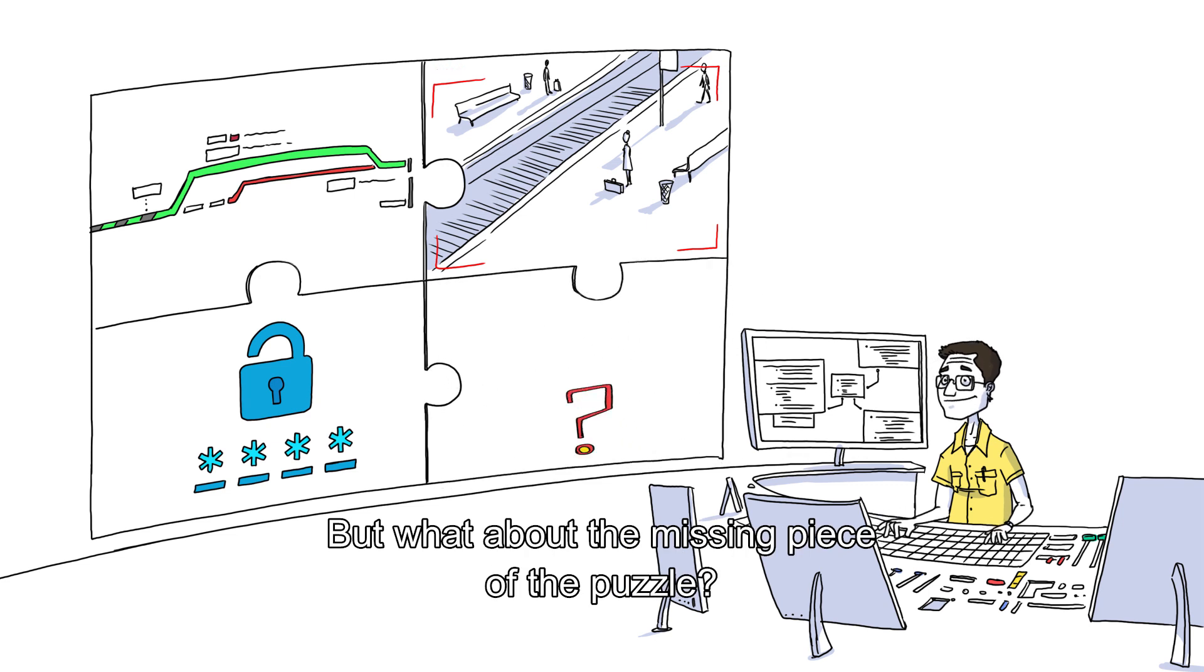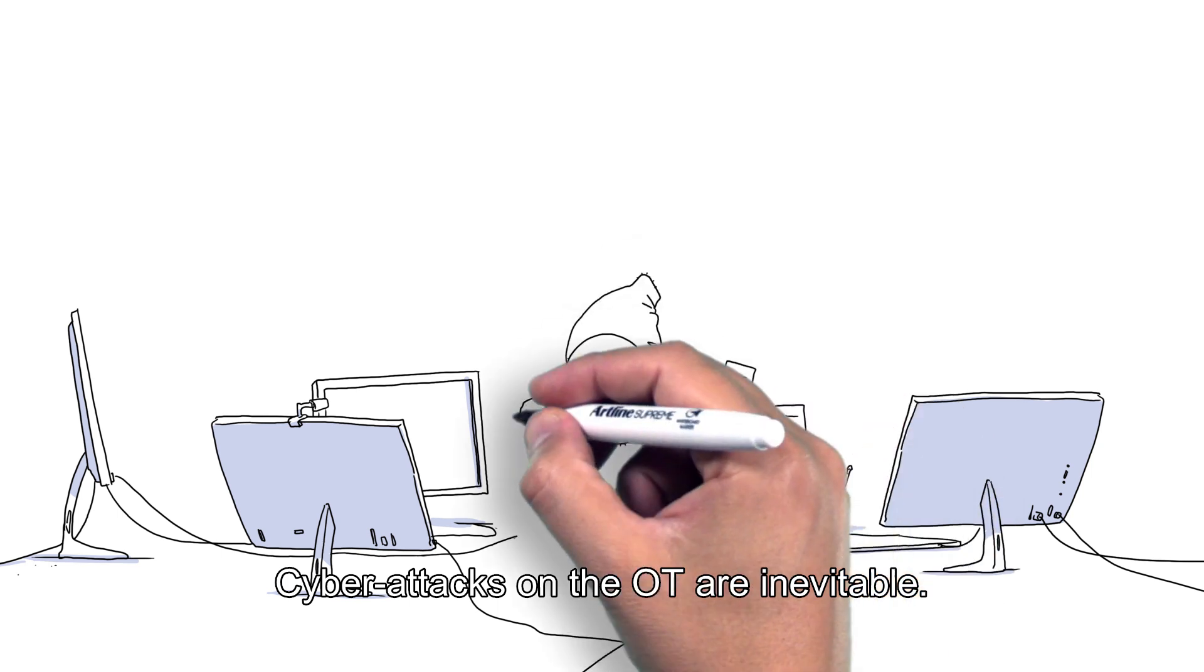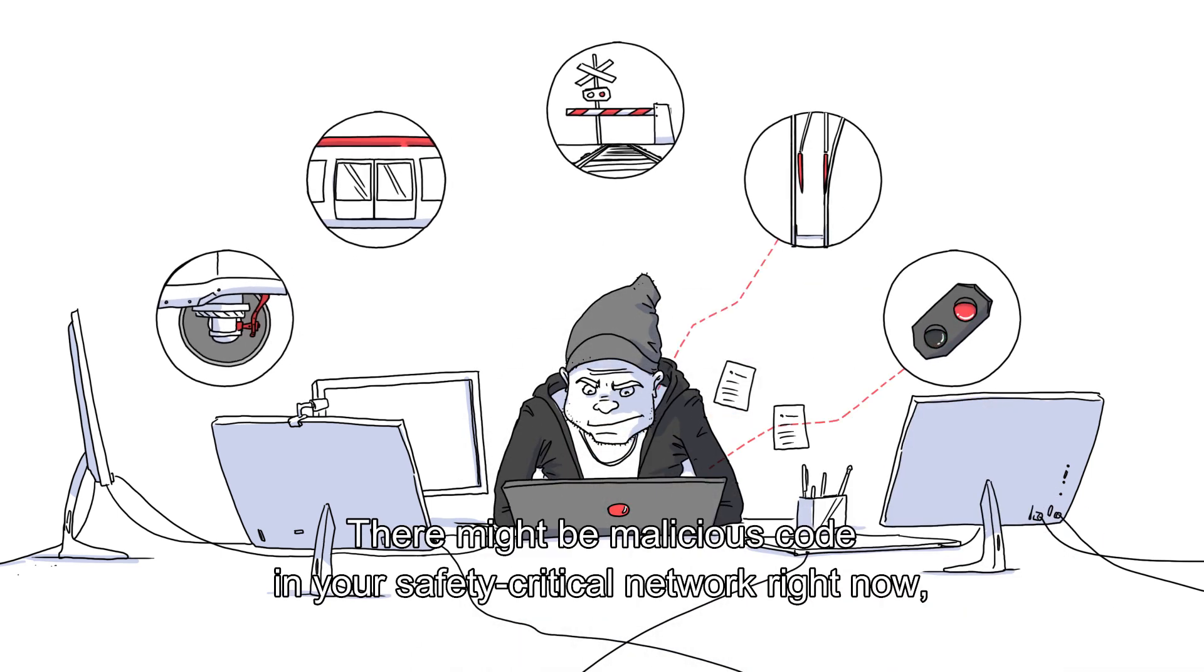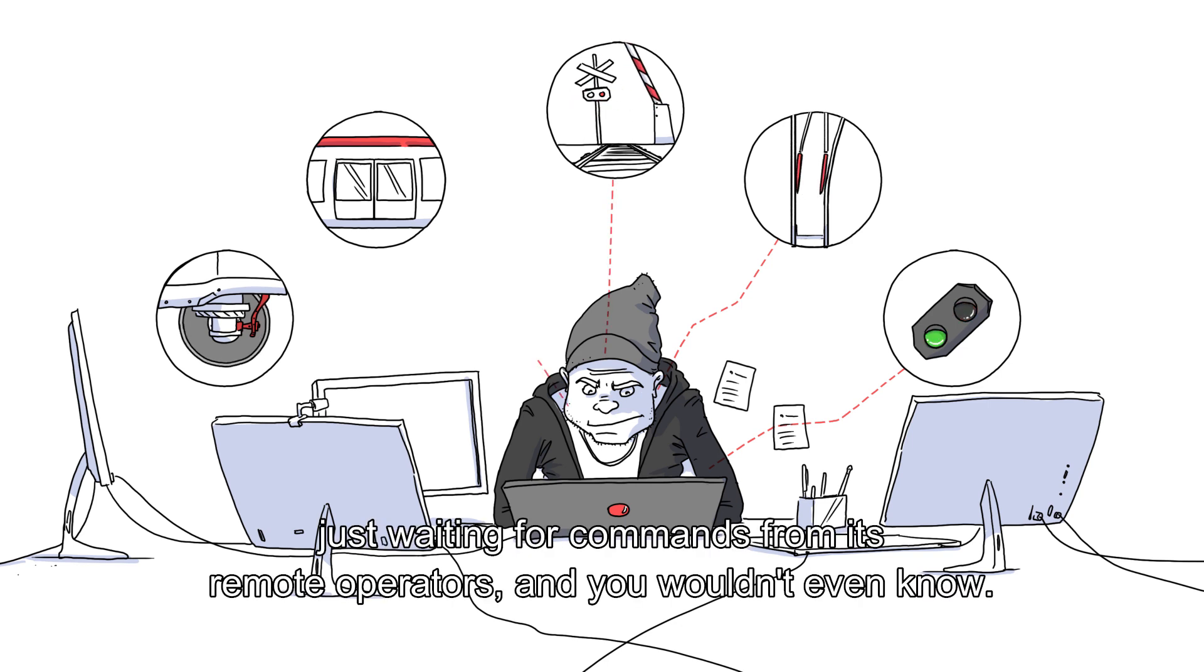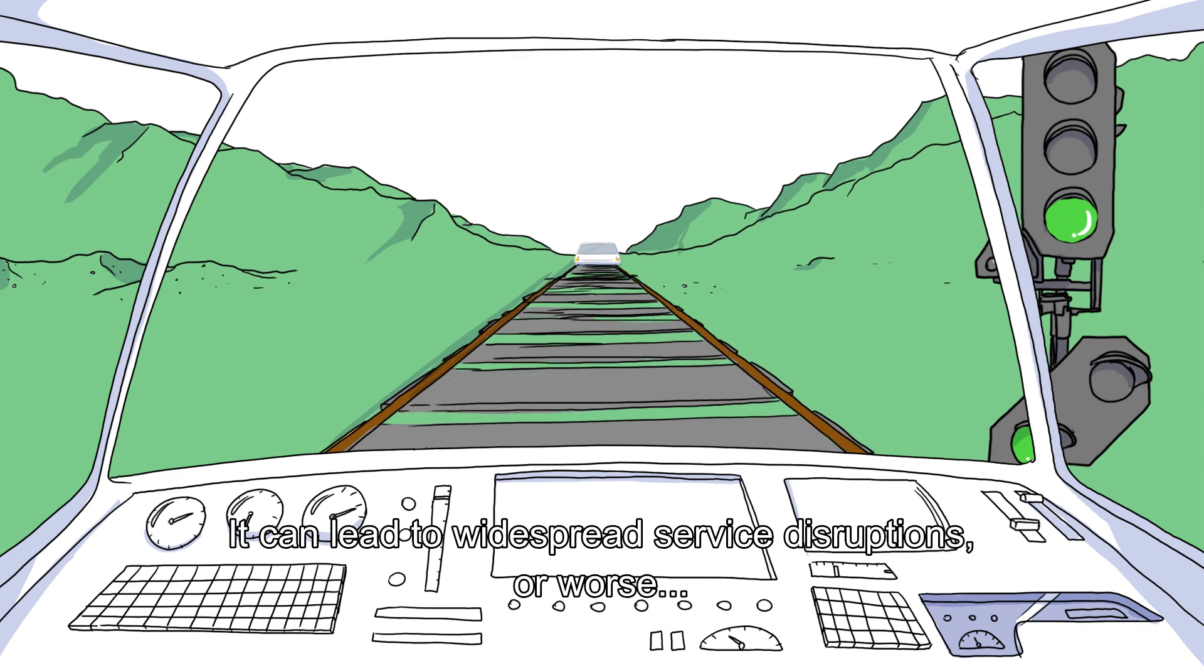But what about the missing piece of the puzzle? Cyber attacks on the OT are inevitable. There might be malicious code in your safety-critical network right now, just waiting for commands from its remote operators, and you wouldn't even know. It can lead to widespread service disruptions, or worse.